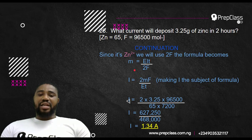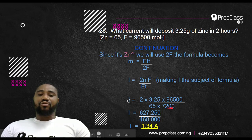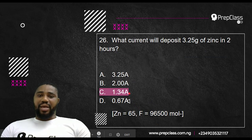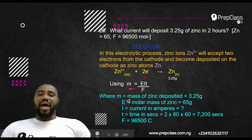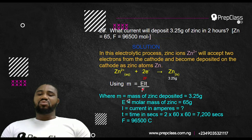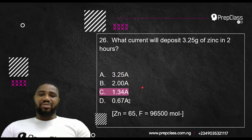So your current I becomes 2 times mass 3.25 times F 96,500, all over E molar mass 65 times the time T which we've converted to seconds. Multiply the numerator, you have 627,250. Multiply the denominator, you have 468,000. Divide this by this, you have 1.34 amperes. So your answer is 1.34 amperes. Very simple. Just always remember to make use of this formula for electrolysis and boom, you just get your answer without all those storytelling that you see in textbooks.